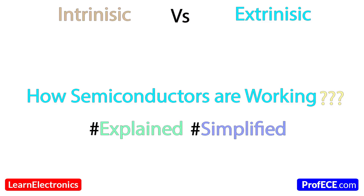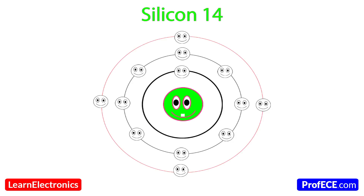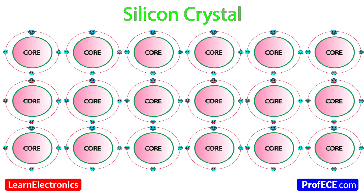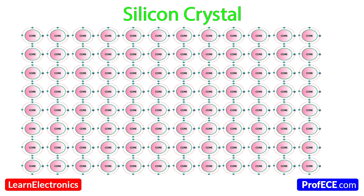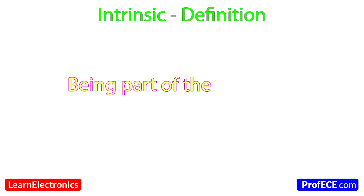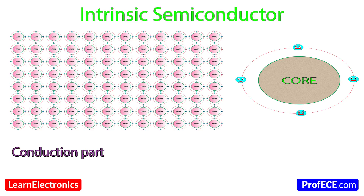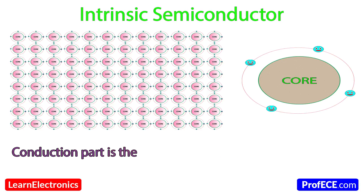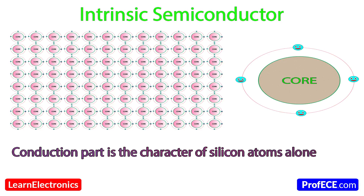In that video, semiconductor functioning was demonstrated by using silicon atoms alone via silicon crystal formation. It is also named as a pure semiconductor because it does not have any impurities. Intrinsic is defined by being part of the character of something. The silicon crystal semiconductor's conduction is a character of the silicon atom alone.